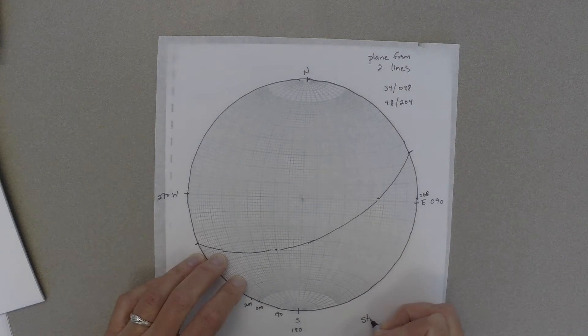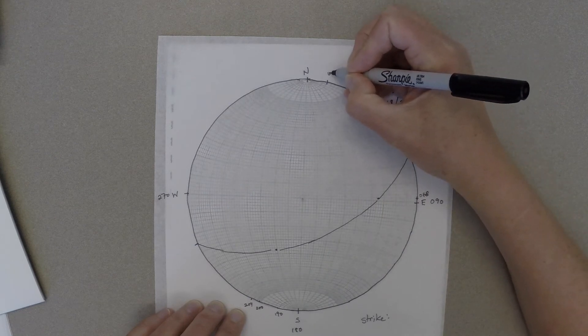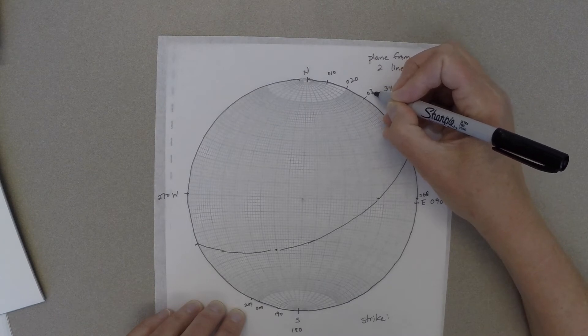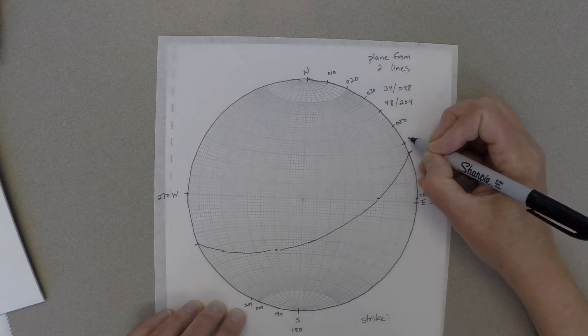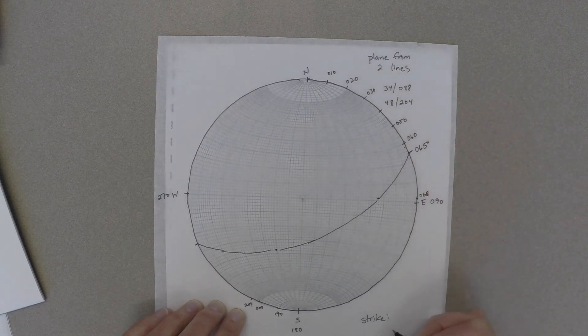Then we're going to figure out the strike of the plane by spinning the tracing paper so that north on the tracing paper lines up with north on the stereonet template, and then counting around the primitive until we get to the tick mark for the strike. In this case, that strike is 065 degrees.